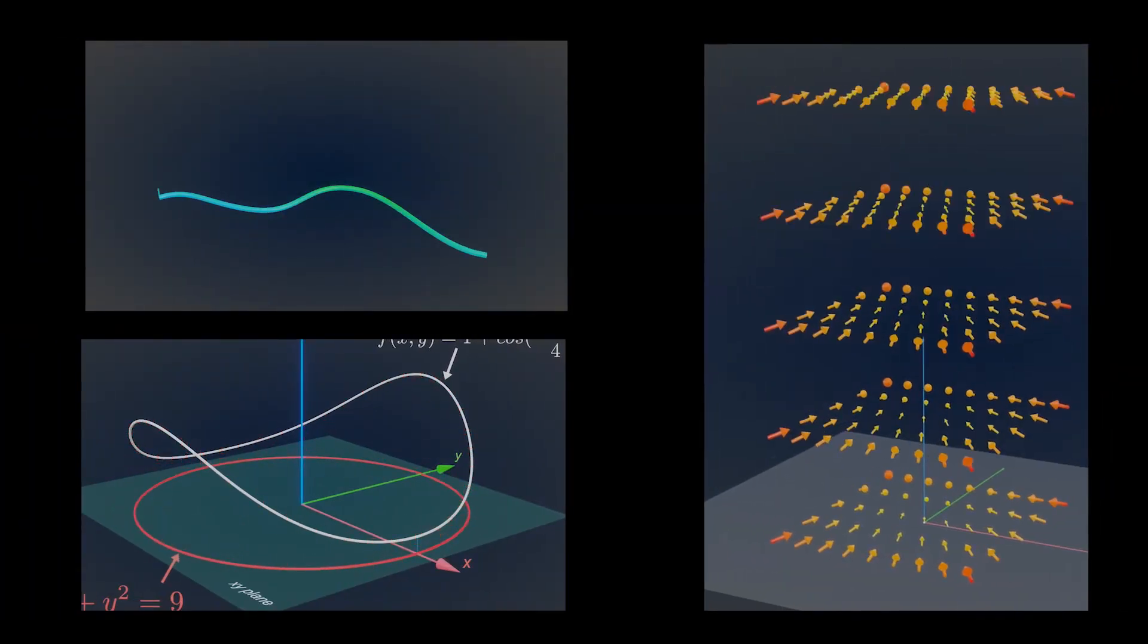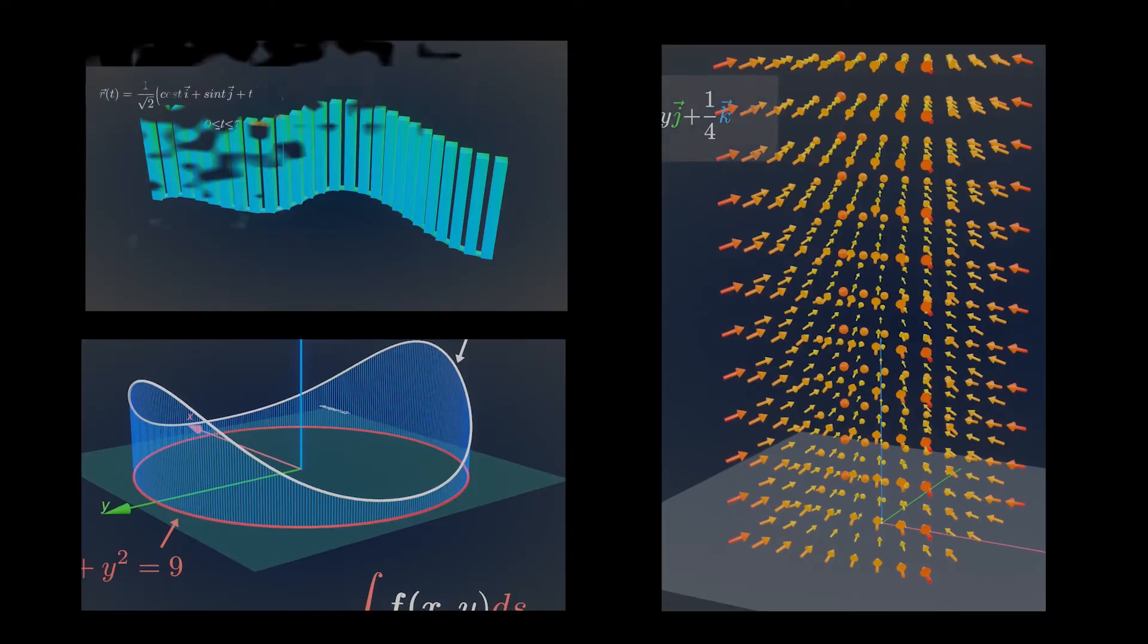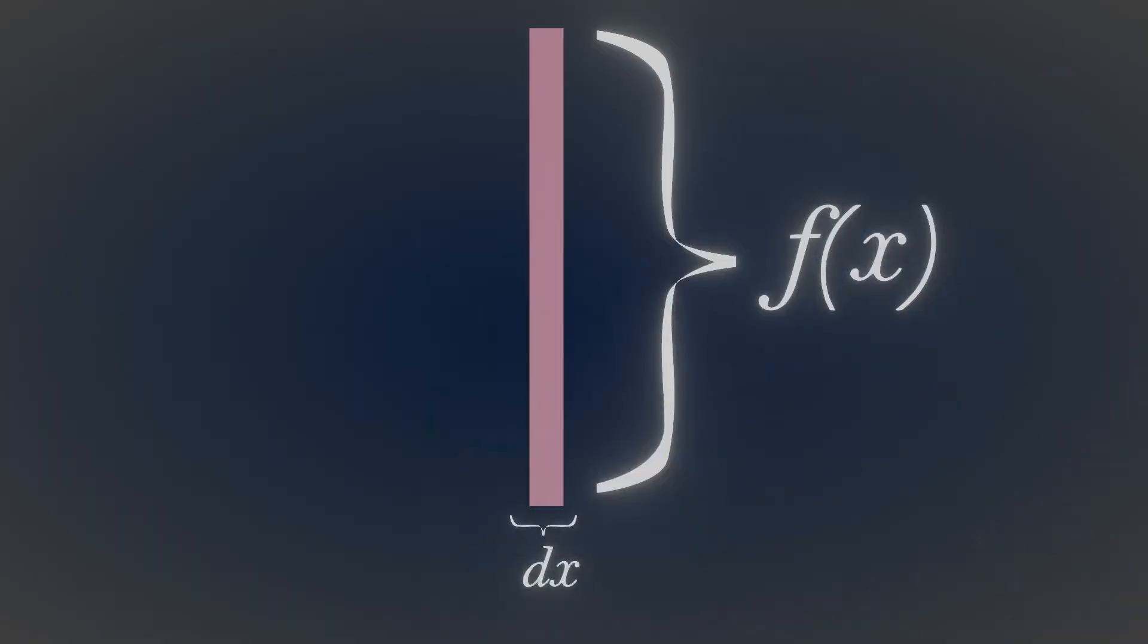You would encounter scalar line integrals and vector line integrals in your calculus book. Let's understand what they mean. Here, I would use a rectangle that has an infinitesimal width and possesses some height to get an intuitive meaning of scalar line integral.